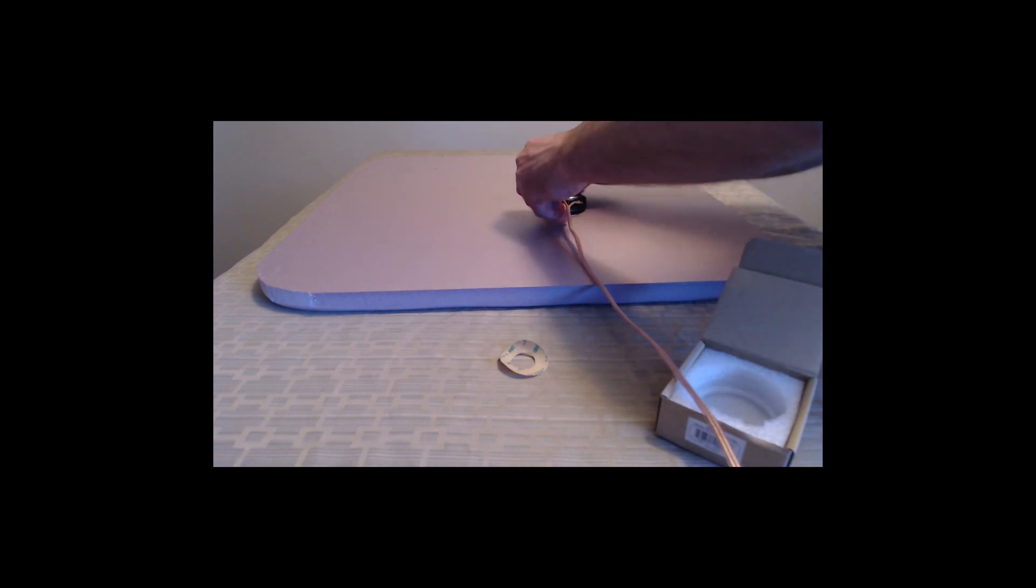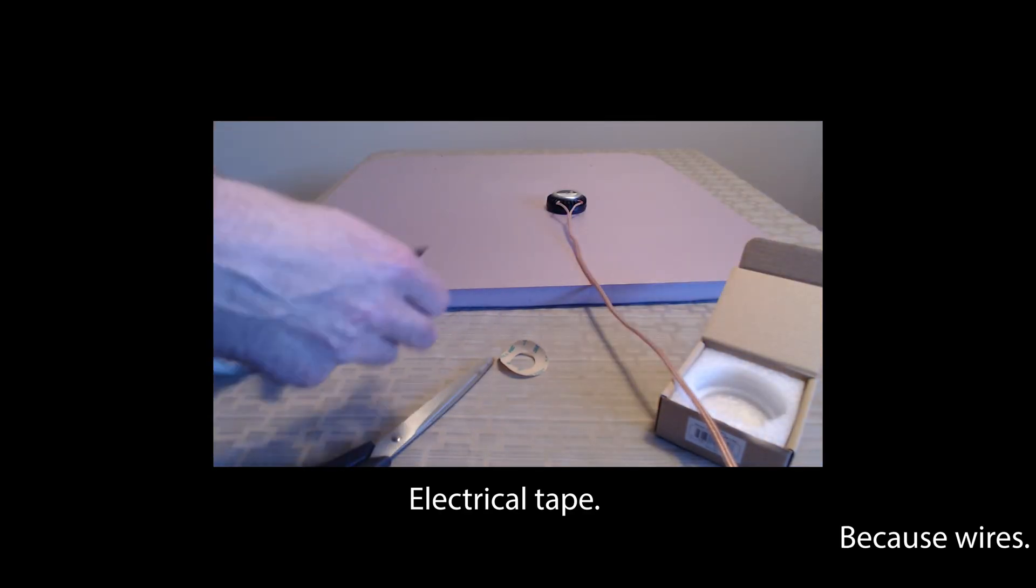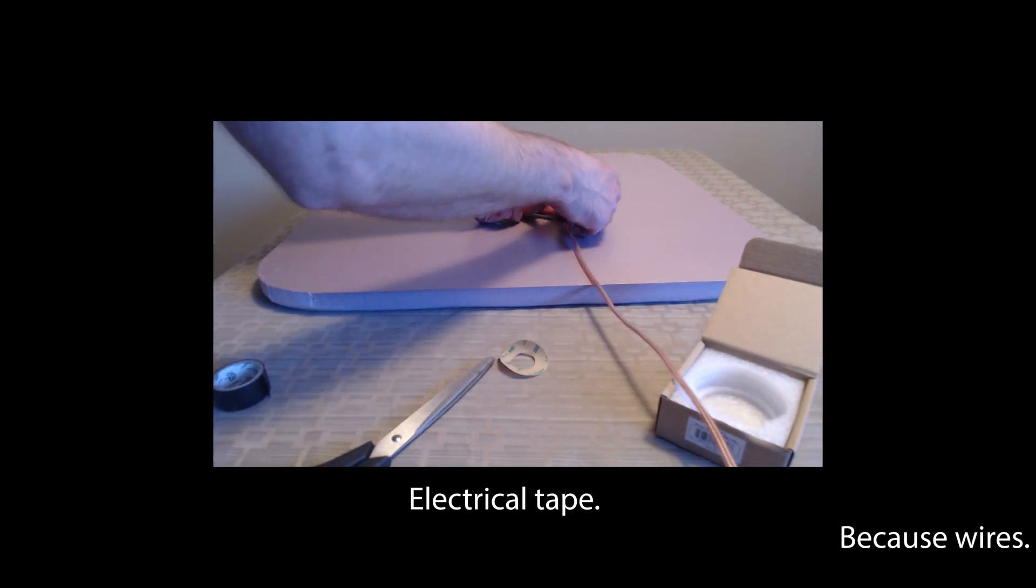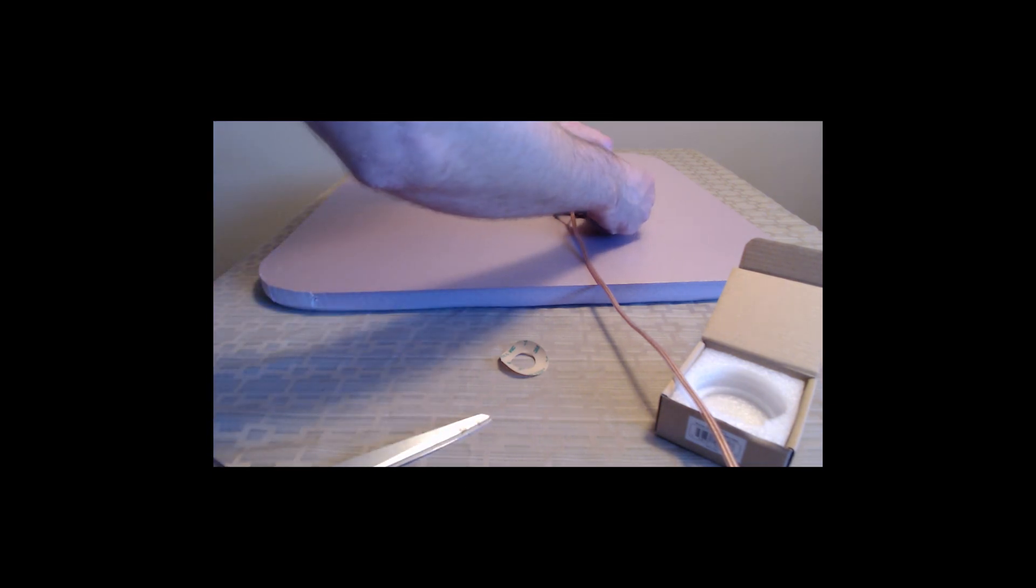Just be careful with the heat gun so you don't melt your foam. I just use electrical tape. Again, it's wires. You don't want those wires to touch and you don't want exposed cables. So I just went ahead and wrapped a little electrical tape around there and it seemed to be good.